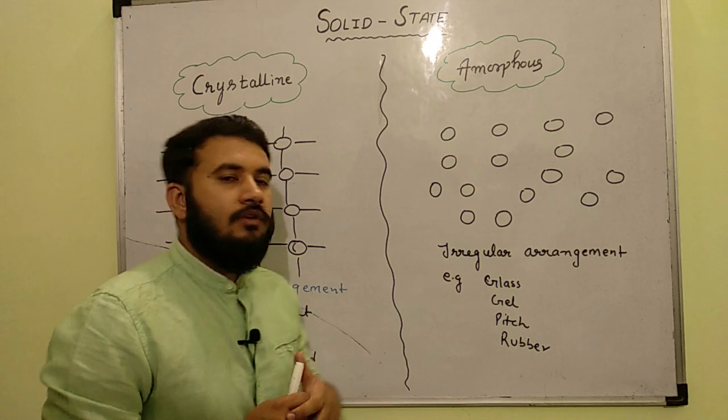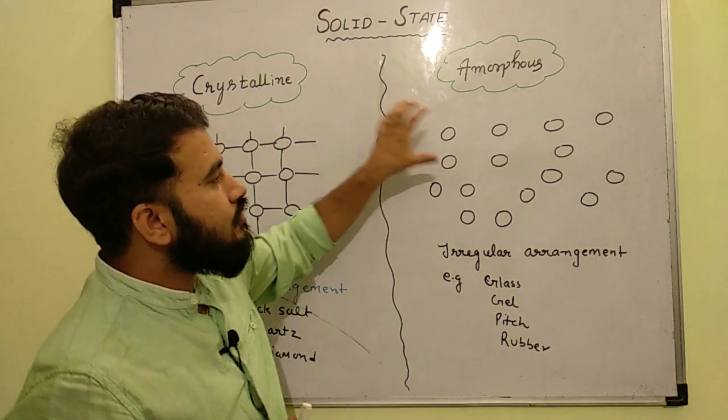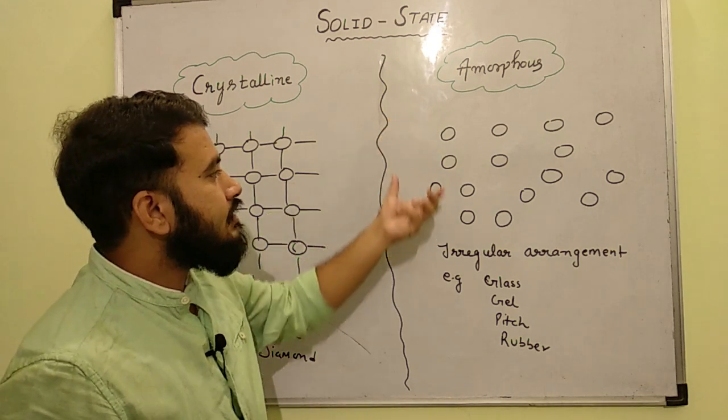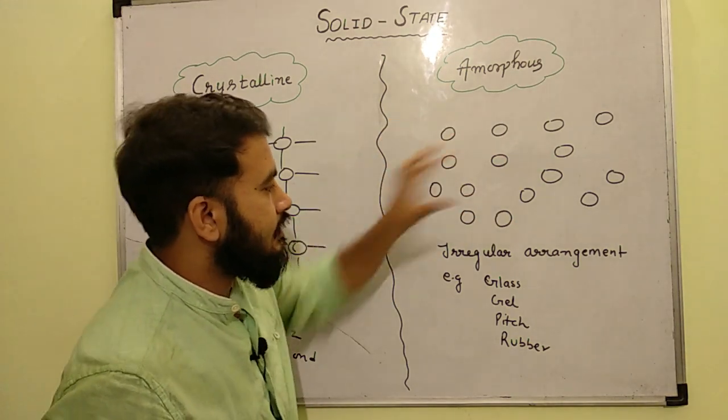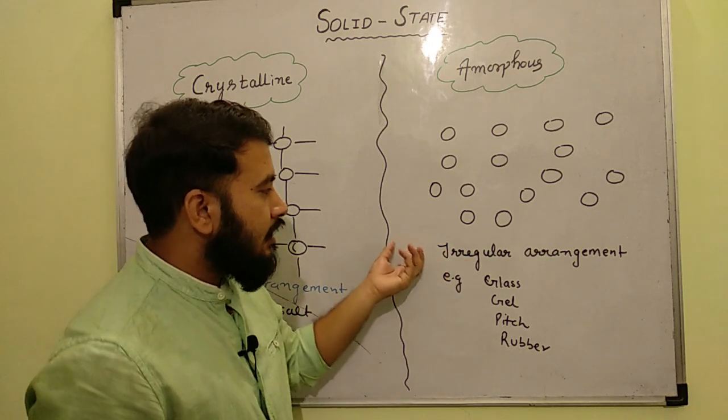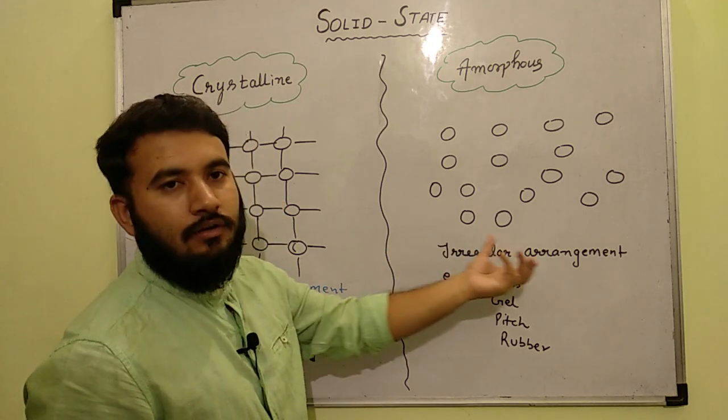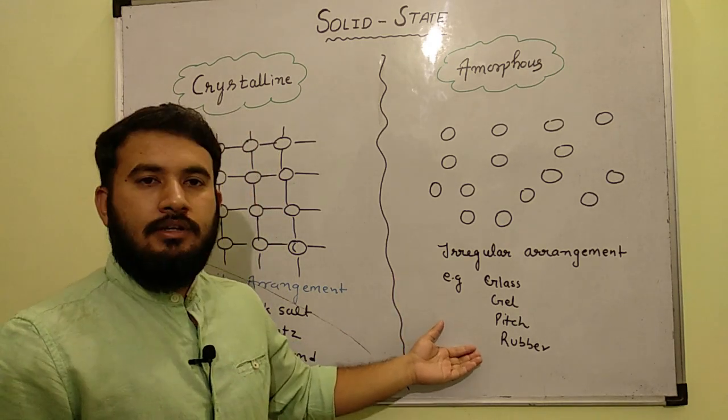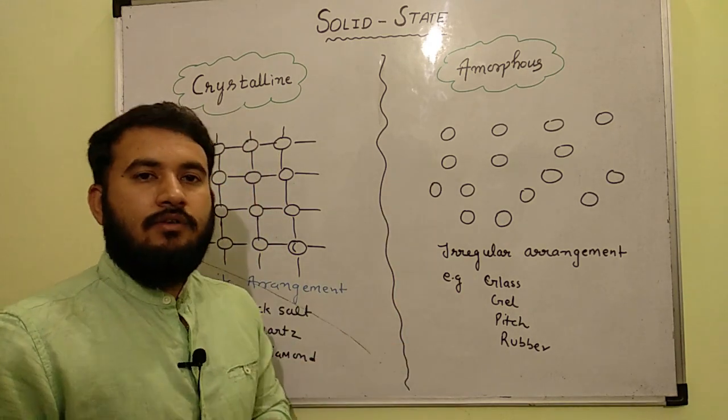And talking about amorphous solid, amorphous solids are those solids in which constituent particles are not arranged in definite pattern. So here we can see that there is no definite pattern in this case. And here we can see that these particles are arranged in an irregular pattern. For example, like glass, gel and pitch and rubber. So these are the examples of amorphous solid.